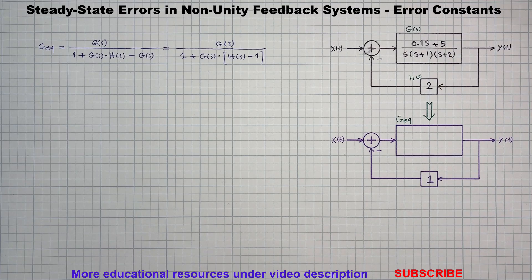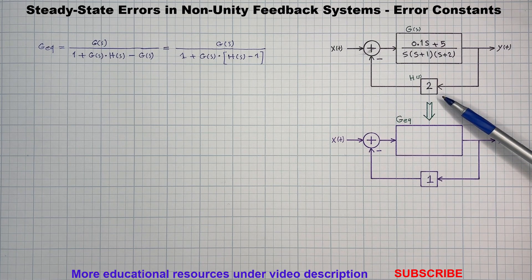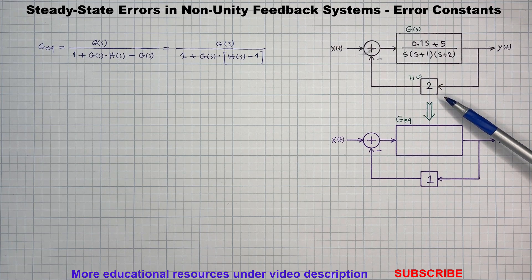In this video, we are going to walk through how to analyze a steady-state error in a control system that has a non-unity feedback path. Normally, when h of s equals 1, we can directly apply the standard formulas to find error constants like position, velocity, and acceleration errors.